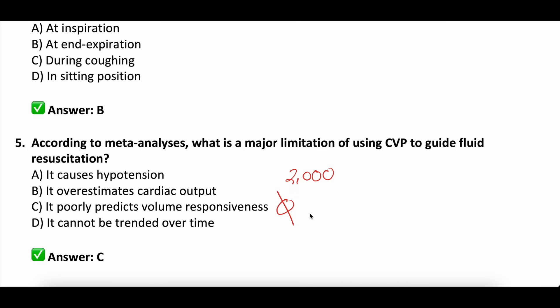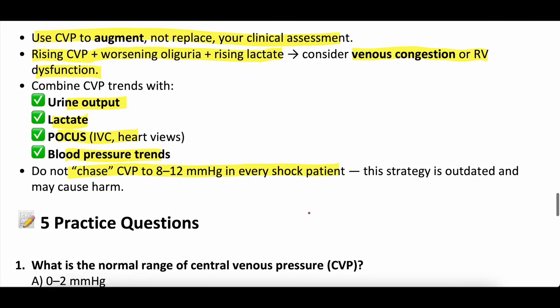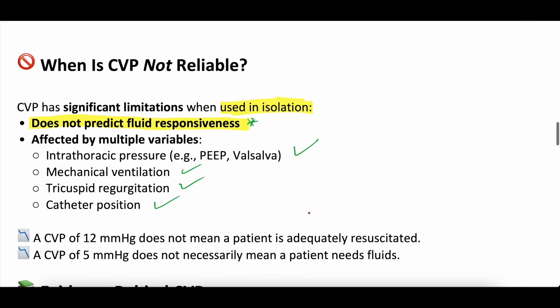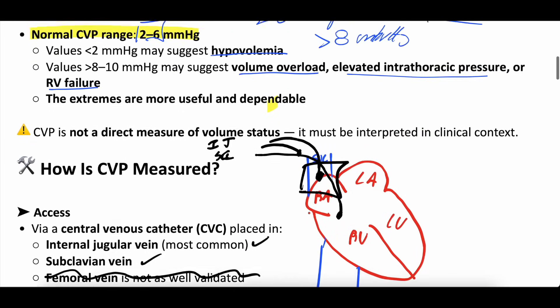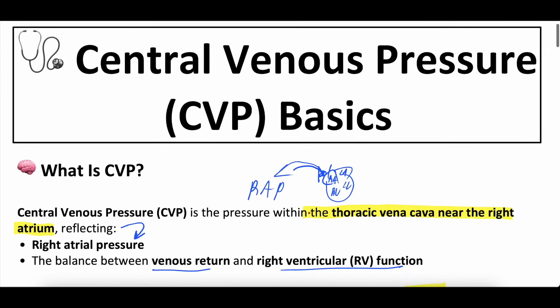In summary, if you're going to use CVP, trend it over time and use it as a single data point amongst the many data points you are gathering to help inform best guesses on clinical decisions. Let us know what thoughts, comments, or questions you have below. Remember, the study guide will be on our Patreon page if you want to check it out. We also have a YouTube platform and podcasting platform. Stay well, keep learning — we hope to see you next time.